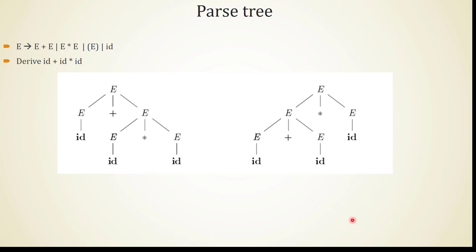A parse tree is another way of representing derivations. In this parse tree, first E+E is used; the left E is replaced with id, the right E is replaced with E*E, and both of those E's are replaced with id. If you look at the leaves from left to right, you get the expression: id, plus, id, star, id. This parse tree actually represents the leftmost derivation used to derive the string id+id*id.